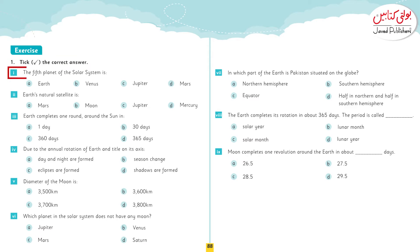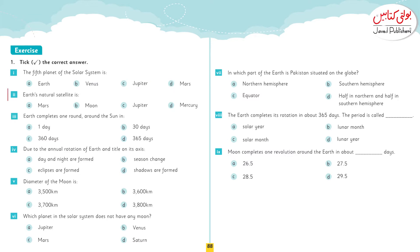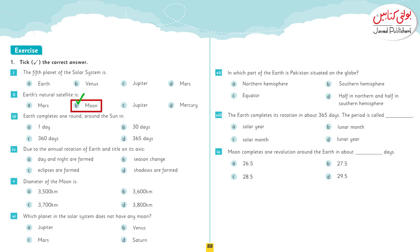Question one: The fifth planet of the solar system is — your options are Earth, Venus, Jupiter, and Mars. The correct option is Jupiter. Earth's natural satellite is — Mars, Moon, Jupiter, or Mercury? Yes, it is Moon.